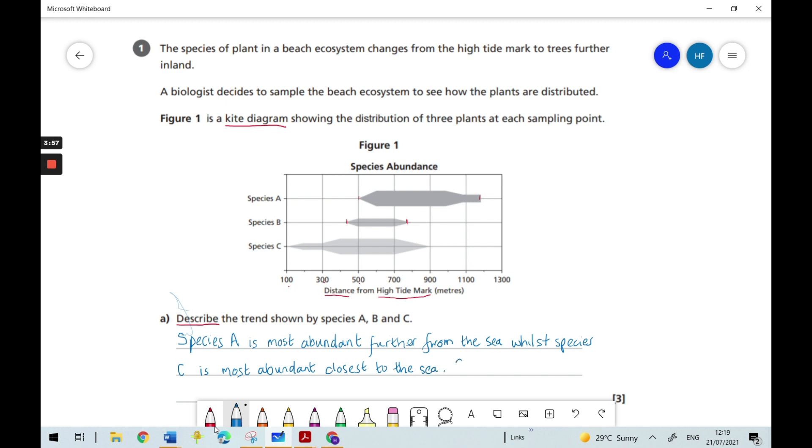And then we need to say something about species B being in between. So species B is most abundant in between species A and C.